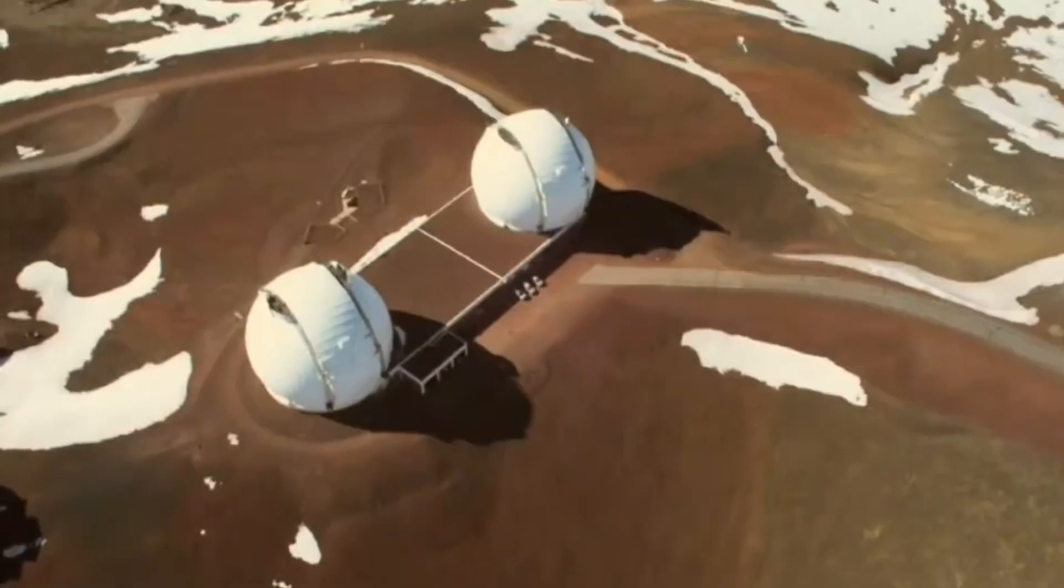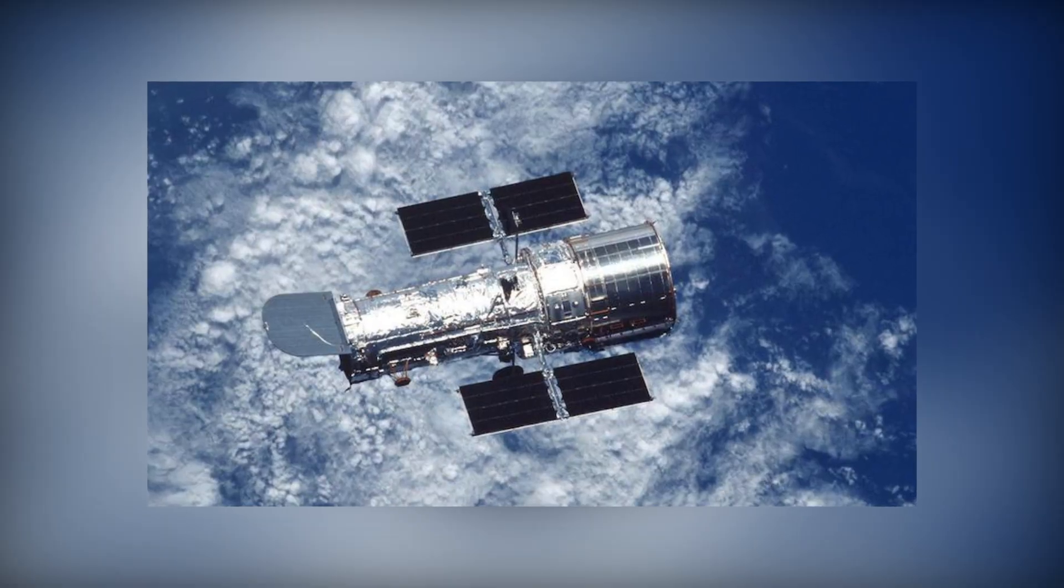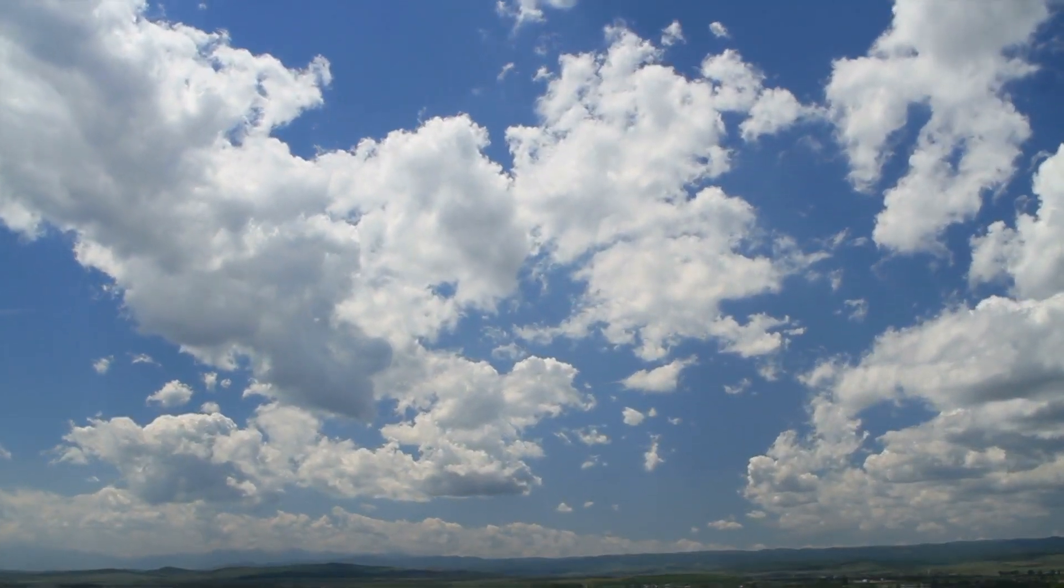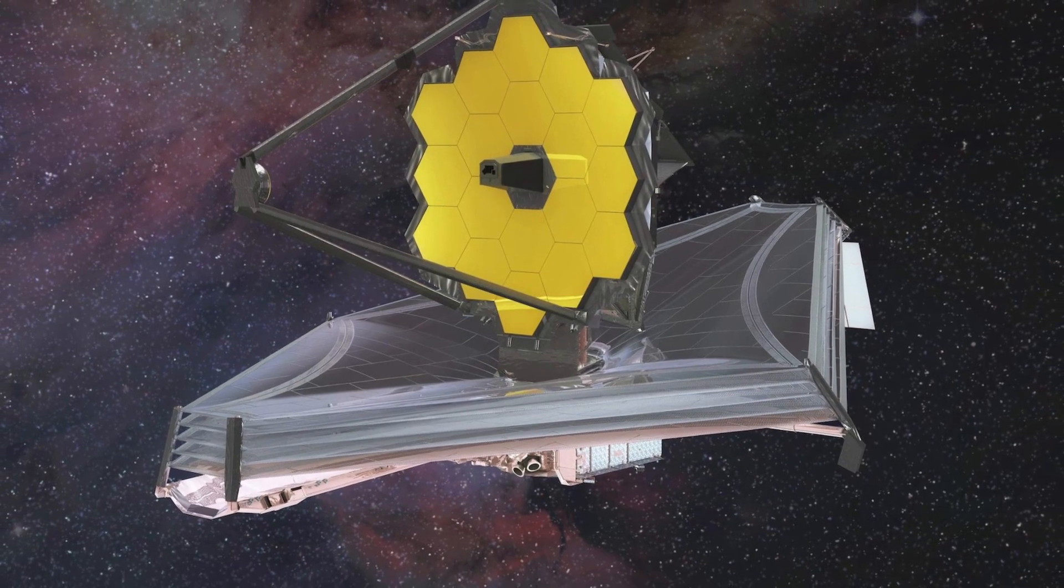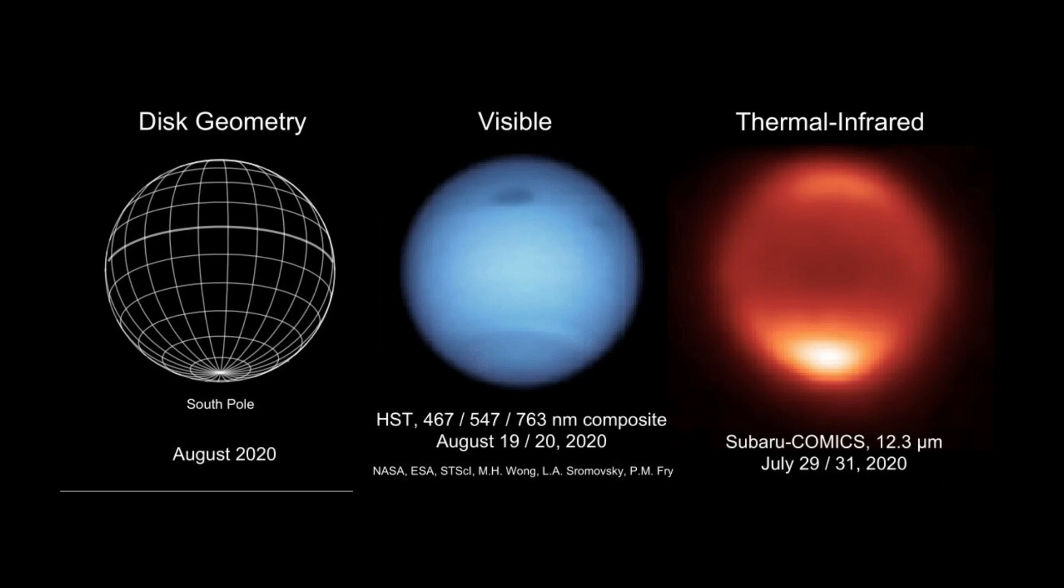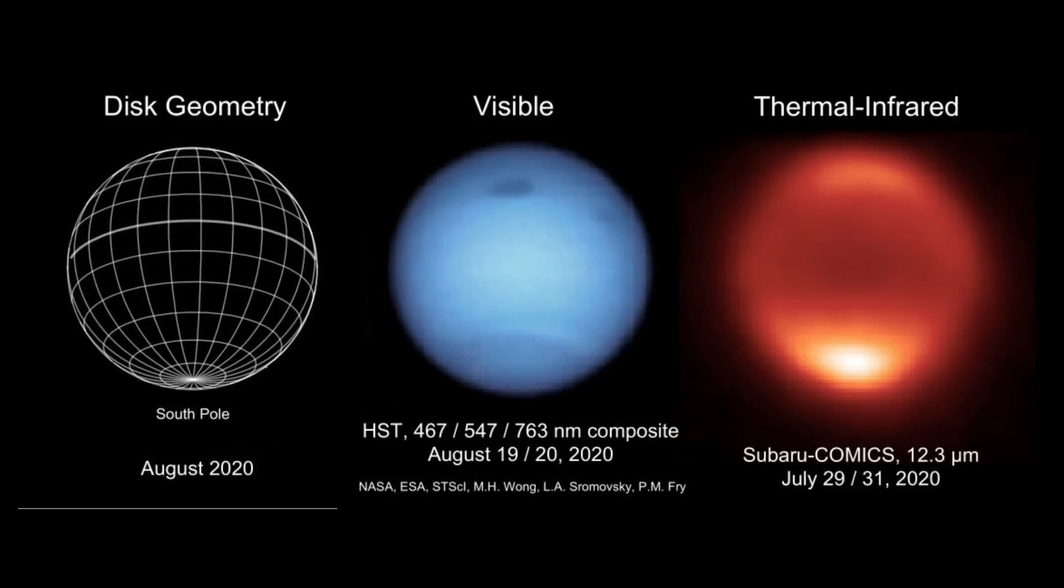Images from observatories such as the W.M. Keck Observatory and the Hubble Space Telescope have documented these rapidly changing cloud patterns over the past years. The James Webb image also reveals a continuous band of high-latitude clouds encircling a previously observed vortex at Neptune's southern pole.